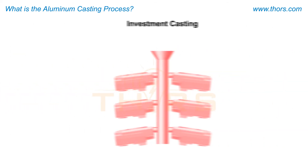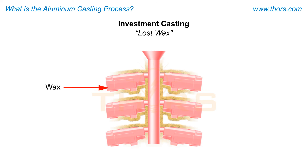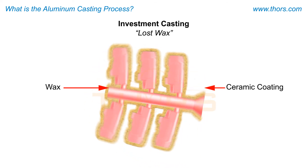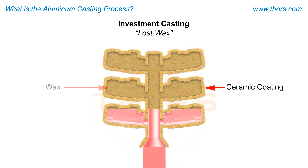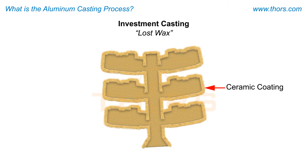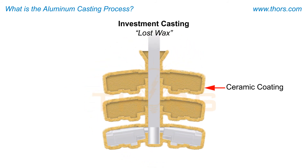Investment casting, also known as lost wax casting, involves creating a shape in wax or similar material and then covering it with a ceramic coating. During a preheating process, the wax melts away, but the ceramic coating remains, providing a shape to be filled with molten metal.